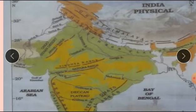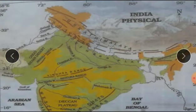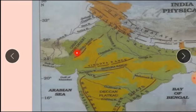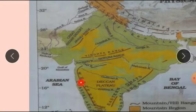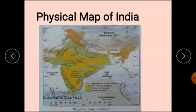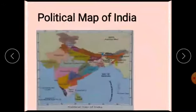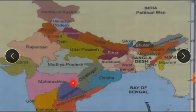Here you can see the picture of a physical map. All the natural features are shown here — the Himalayas, the Great Indian Desert. Next, political maps: maps showing districts, cities, towns, states and countries and their boundaries are called political maps. Here is a political map.